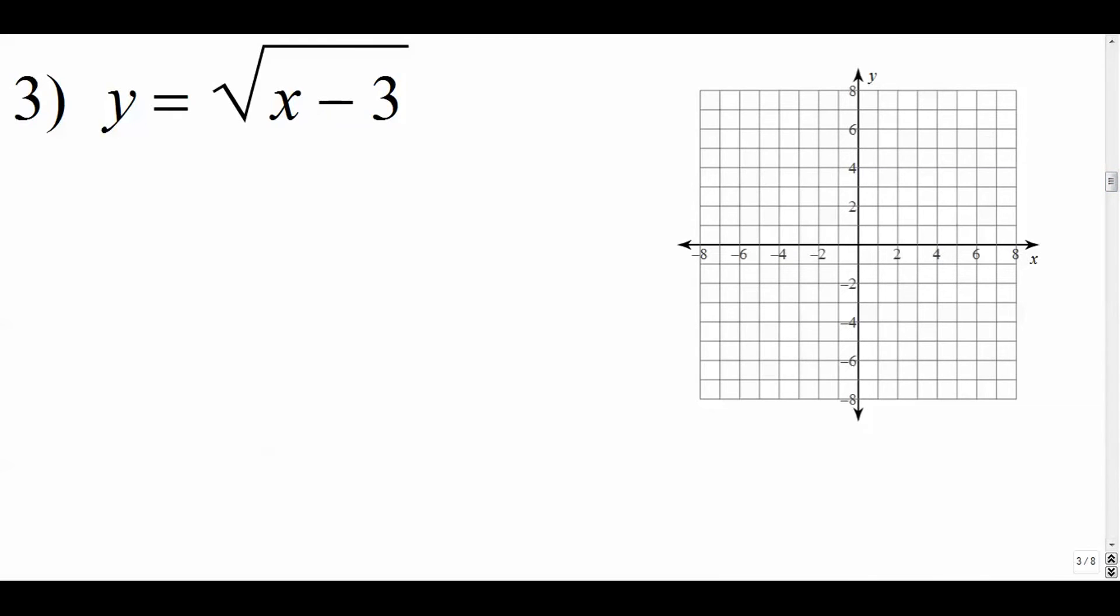Number 3. We've got our parent right there. And this transformation is underneath our radicals, so that means it's going to be left and right. If it's x minus 3, that means it's shifted right 3. So this one is right 3 and it preserves the same shape. So that means that my domain is [3, ∞) and my range is [0, ∞).